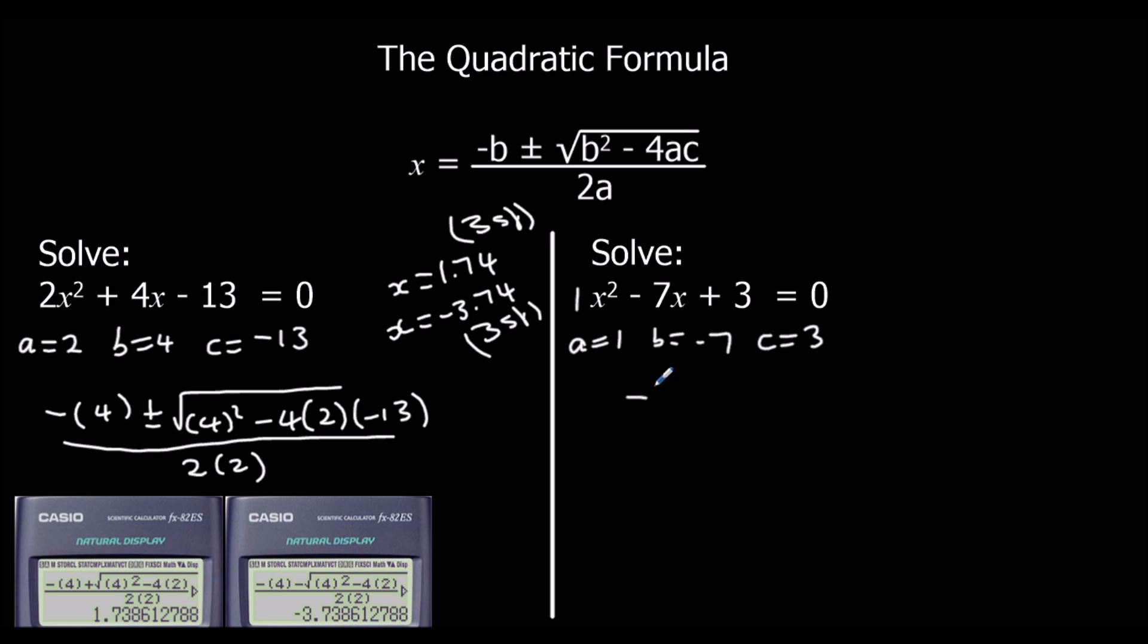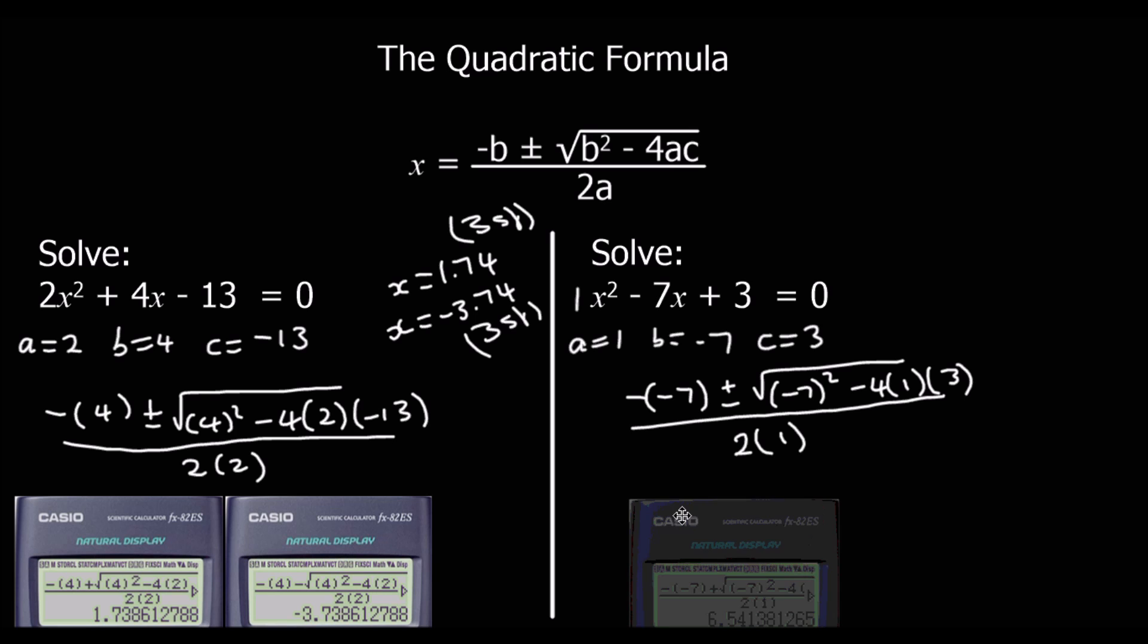And then the substitution. So minus minus 7, plus or minus the square root of minus 7 squared, minus 4, times 1, times 3, all over 2 times 1. So we type it into the calculator with a plus. And that's 6.54.